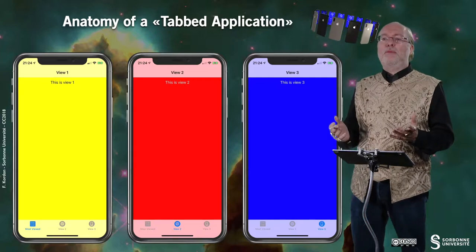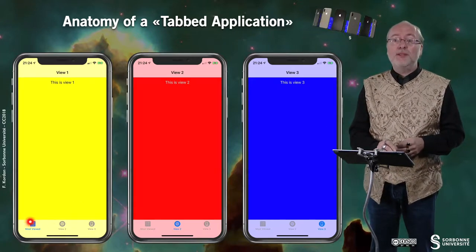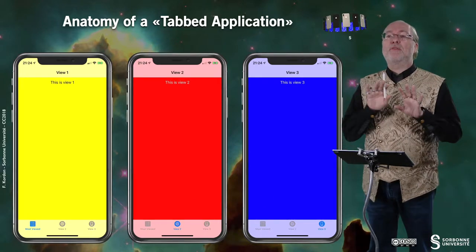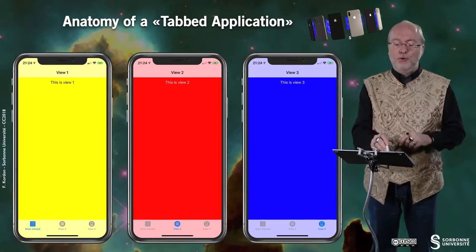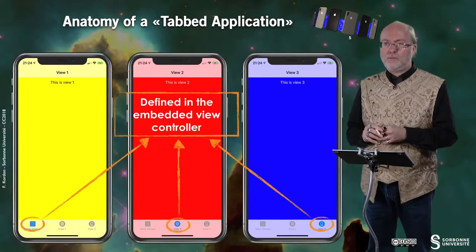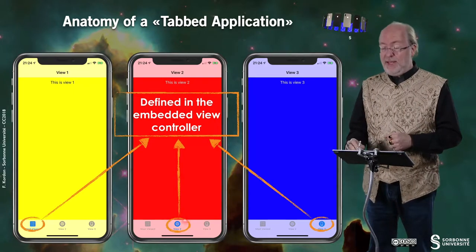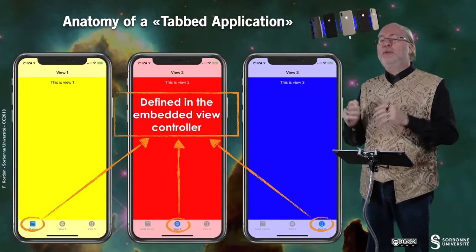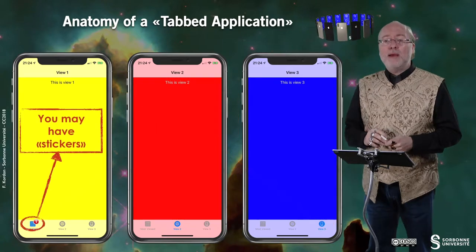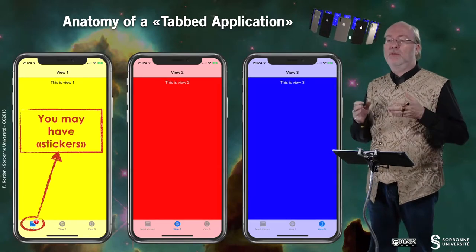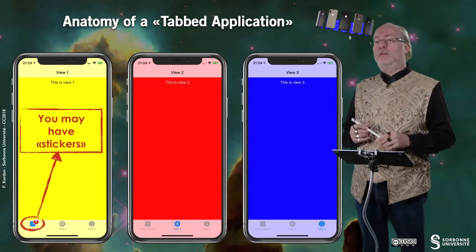Let's look at the anatomy of a tab application. Here you can see the tabbar, with tabbar items — this is the activated one, and there are others here and here. There are three views attached together, each embedding a UINavigationController. What is displayed in the tabbar item is defined in the embedded view controller. You should do that in the init because it has to be available as soon as possible. You may also have badges attached to the tabbar items — for example, to indicate that some event needs the user's attention in that hierarchy of views.